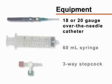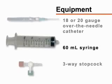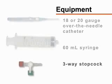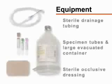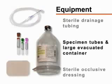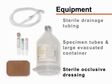For the collection of pleural fluid, you will need an 18 to 20-gauge over-the-needle catheter, a 60-milliliter syringe, and a three-way stopcock. You will also need sterile drainage tubing, specimen tubes and a large evacuated container, and a sterile occlusive dressing.